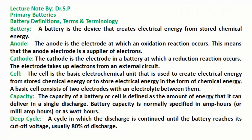Cathode: the cathode is the electrode in a battery at which a reduction reaction occurs; the electrode takes up electrons from an external circuit. Cell: the cell is the basic electrochemical unit that is used to create electrical energy from stored chemical energy or to store electrical energy in the form of chemical energy. A basic cell consists of two electrodes with an electrolyte between them.